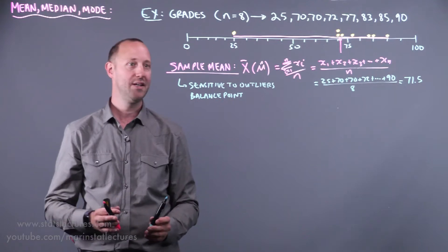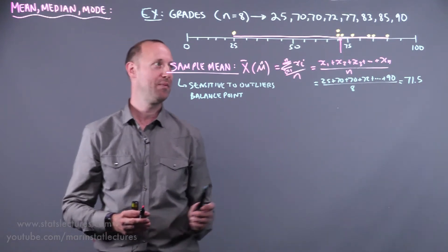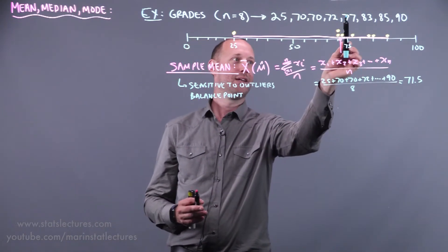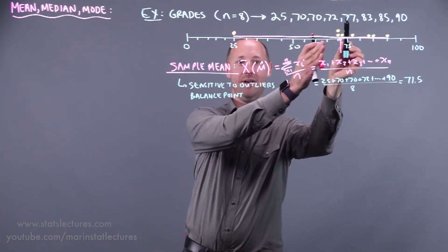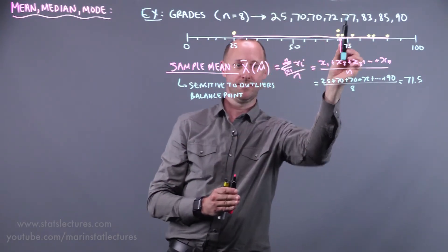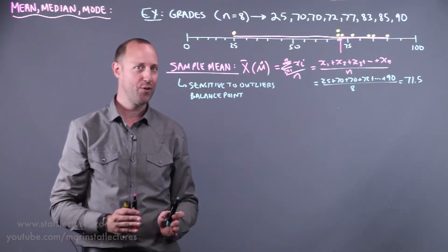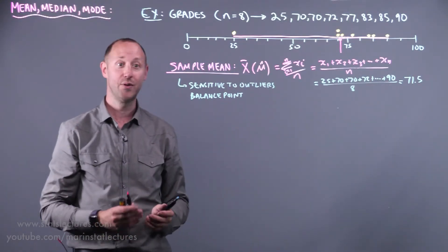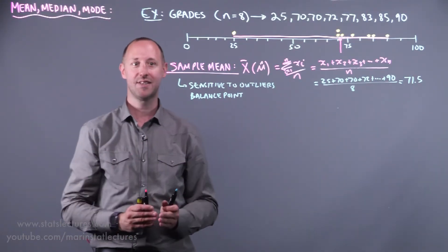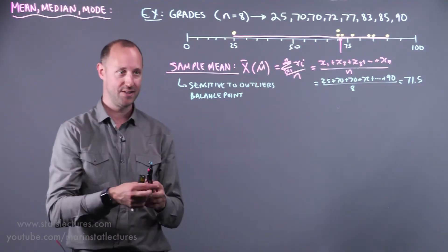In a moment we'll formally define the median, but you likely already know what the median is. The median is the value that cuts the data in half, right? Half below, half above. So while the mean and median are both measures of central tendency, they do it in slightly different ways. What cuts it in half versus what tries to balance the data?